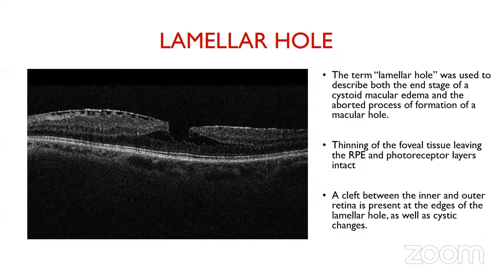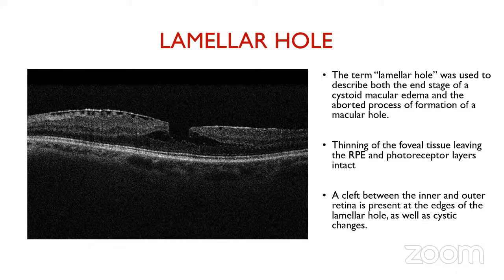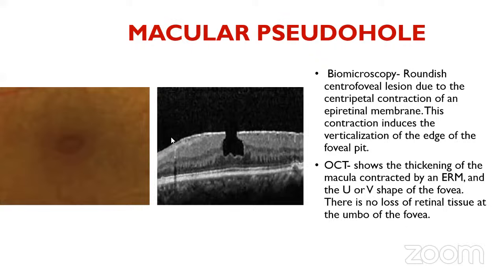Other types of macular holes are lamellar hole and pseudo hole. A lamellar hole is a type of aborted macular hole — cystoid macular edema is generally present. It shows thinning of the foveal tissue leaving the RPE and photoreceptor layers intact, with a cleft seen between the inner and outer retina at the lamellar hole edge. This distinguishes it from a pseudo hole — in lamellar hole there is splitting of the inner retinal layers, whereas in pseudo hole there is epiretinal membrane proliferation with heaping of the inner retinal layers but no splitting.